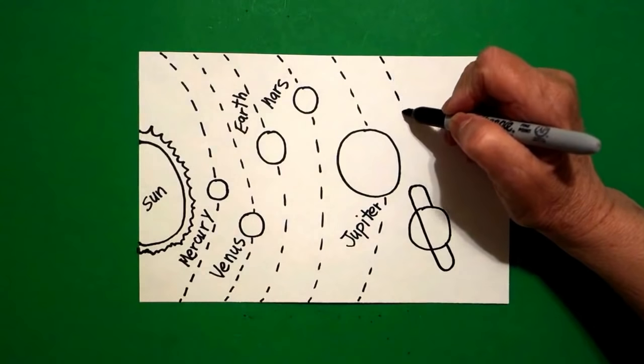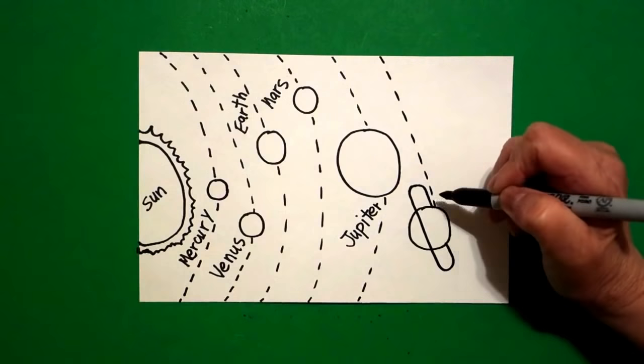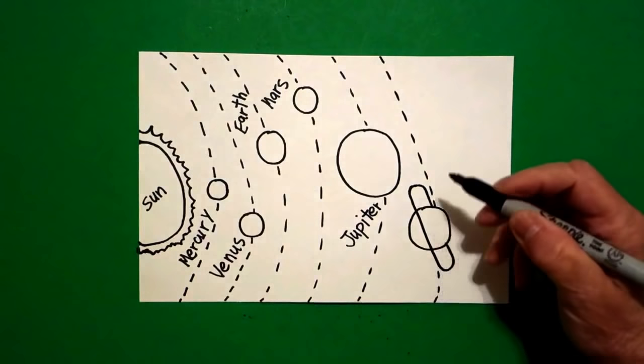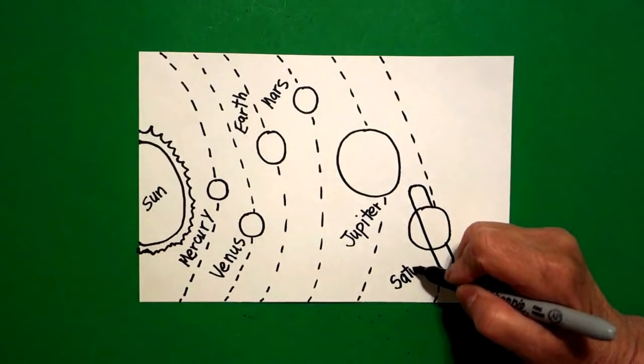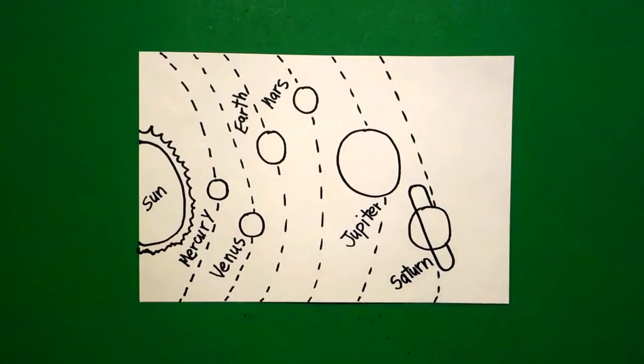So I'm going to draw my dotted lines. Those are my orbits, remember that. And now I'm going to write Saturn. S-A-T-U-R-N.